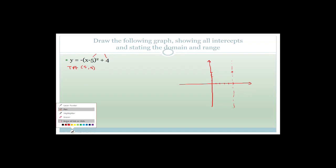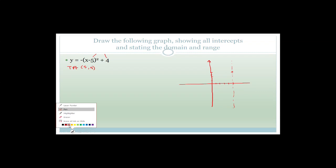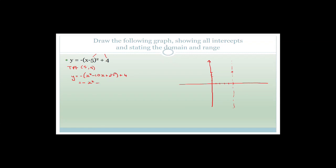I need to extend the x-axis a bit. Now what needs to happen is we need to find the x-cuts and the y-cut. The best way to do this is to multiply this out and get it in its standard form. So we've got y is equal to minus, this squared becomes x squared minus 10x plus 25, plus four, which becomes minus x squared plus 10x minus 25 plus four. Since minus 25 plus four is minus 21.